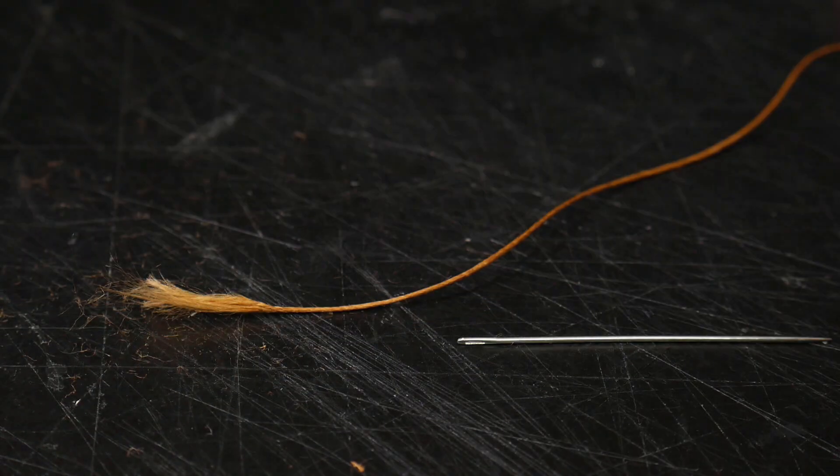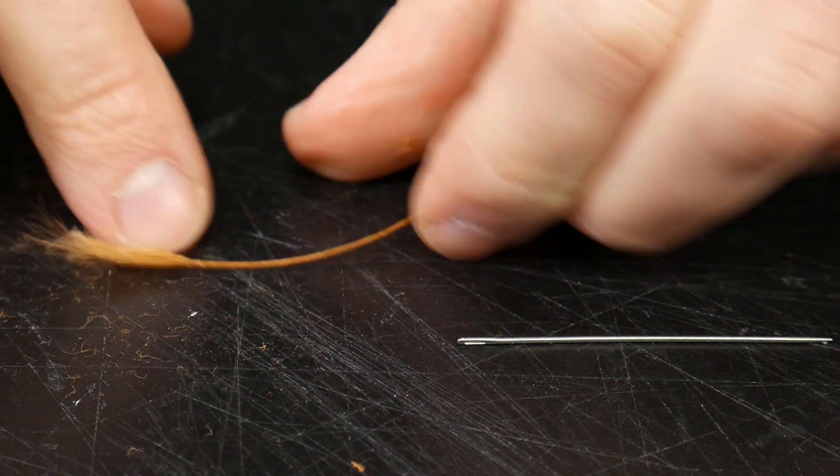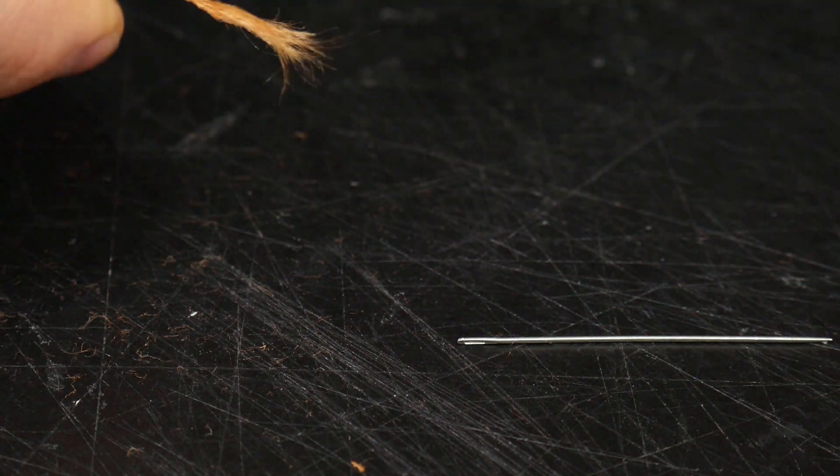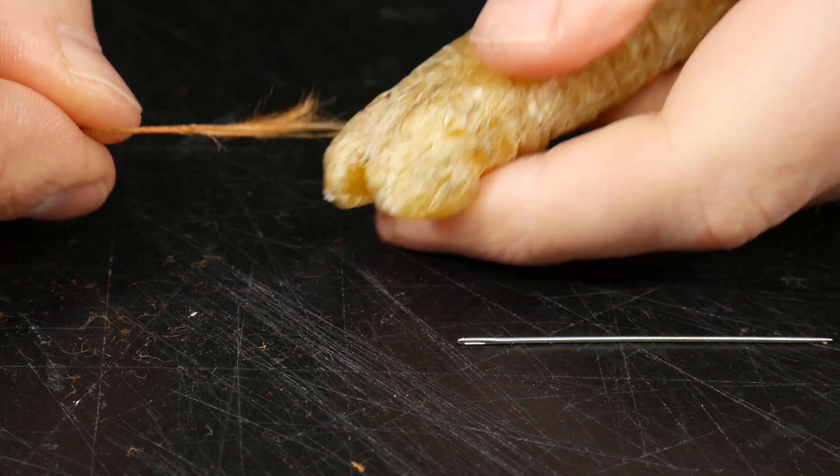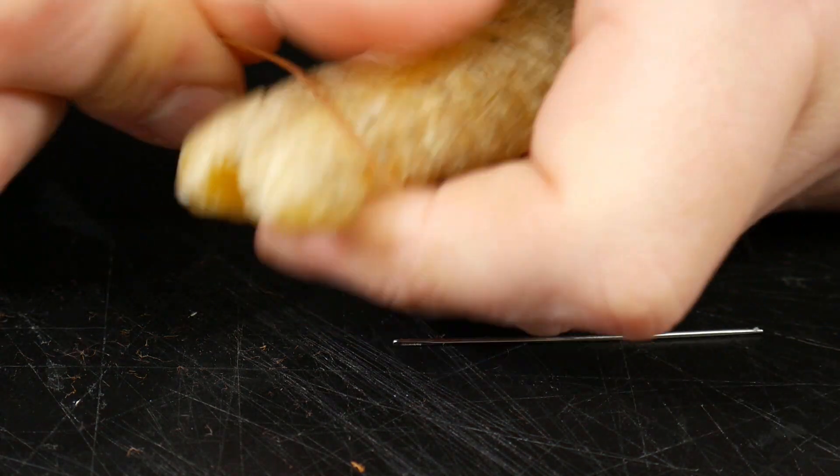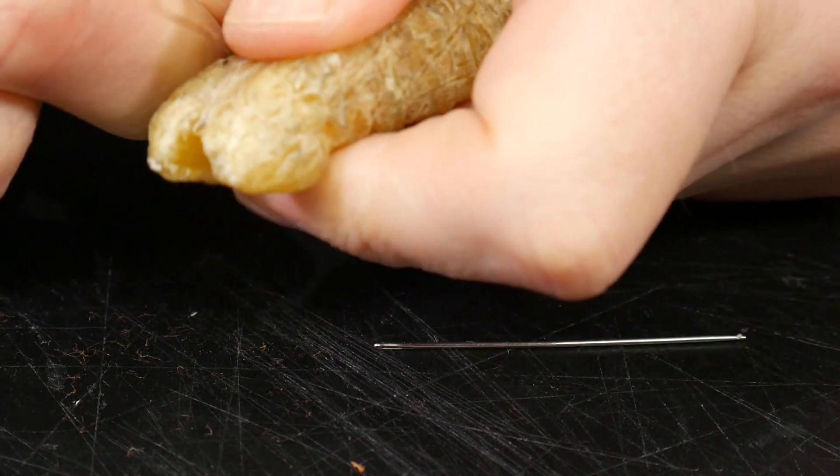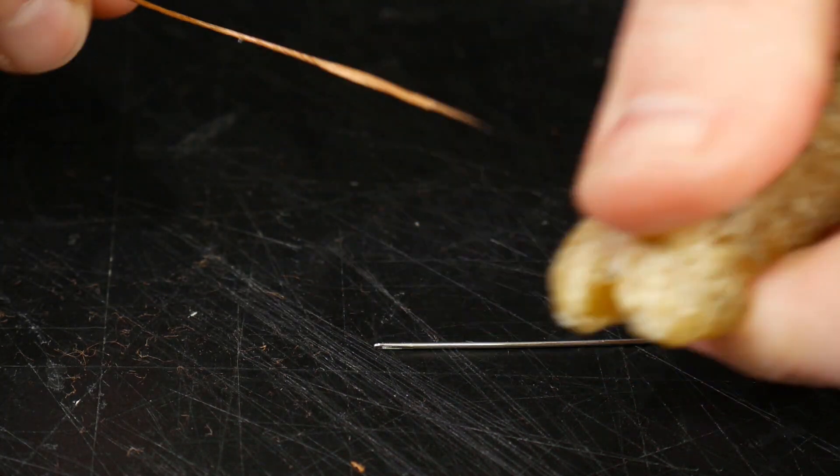Okay, now you can remove that. And at this point, that's obviously not going to fit through a needle, best of luck with that. We're going to take a piece of wax, just some beeswax, and I'm going to pull it through a few times just to wax that end. What we're looking for is a tapered point.